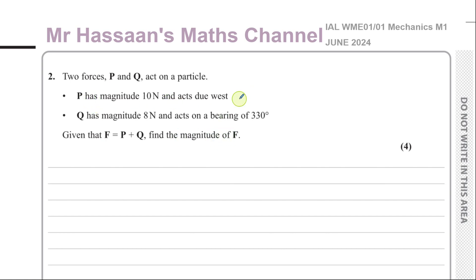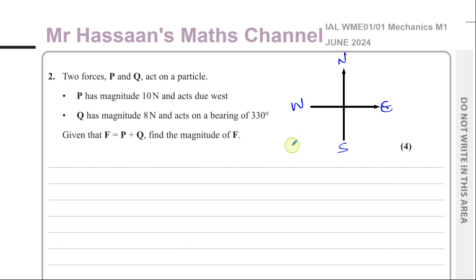So basically you have a force acting due west. We should know our compass directions and our bearings for this type of question. So we have north, east, south, and west. P is acting due west, so P is acting in this direction. And Q is acting on a bearing of 330 degrees. Bearings are always measured from the north line and always clockwise. So 330 degrees — you go through 90, 180, 270, and then 330, so it's somewhere in this direction.